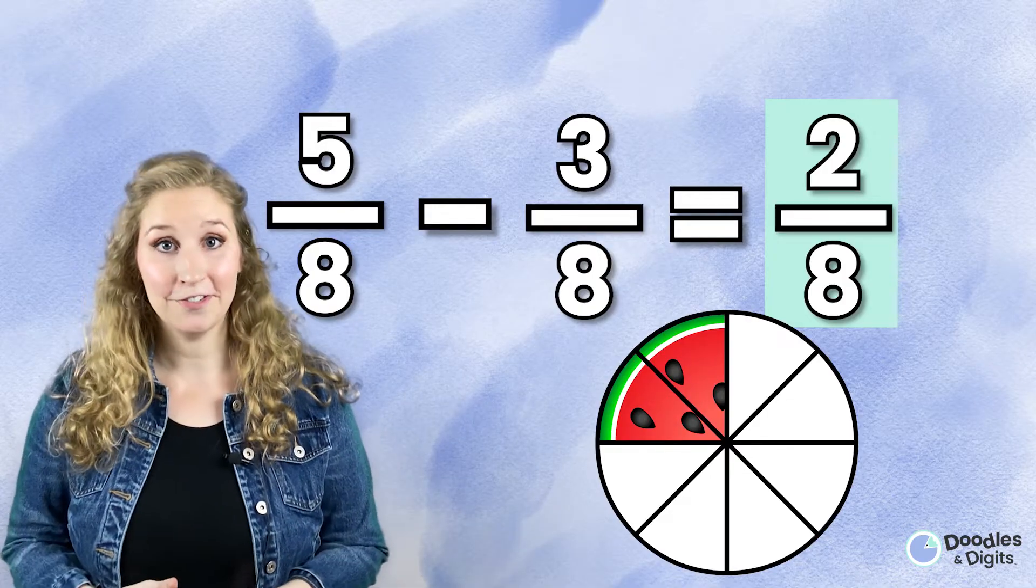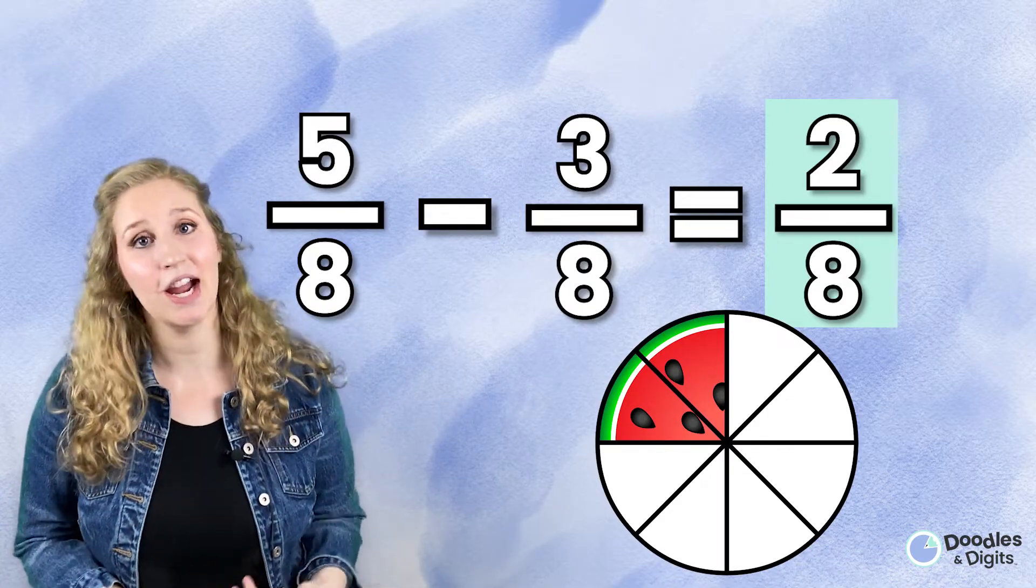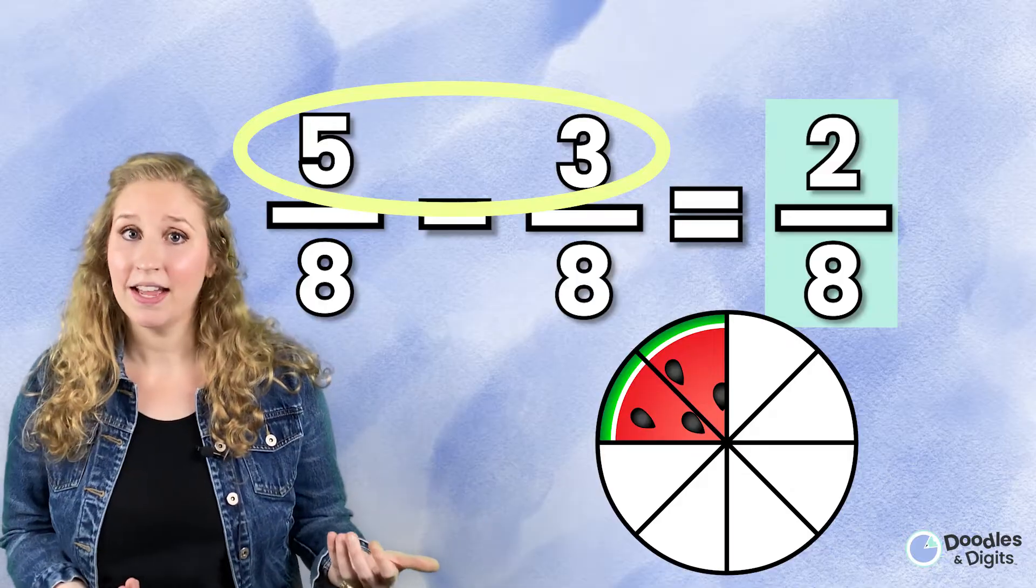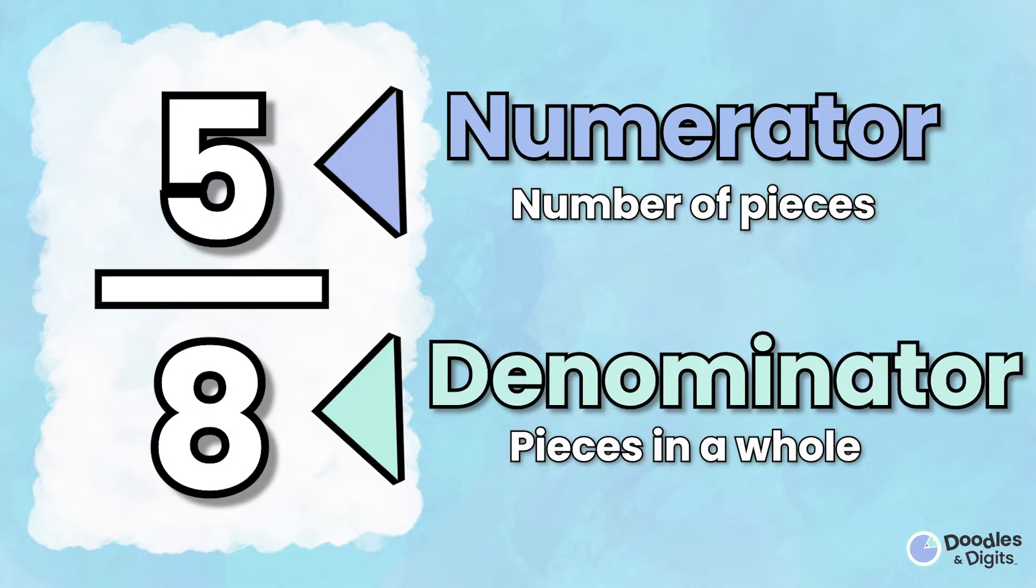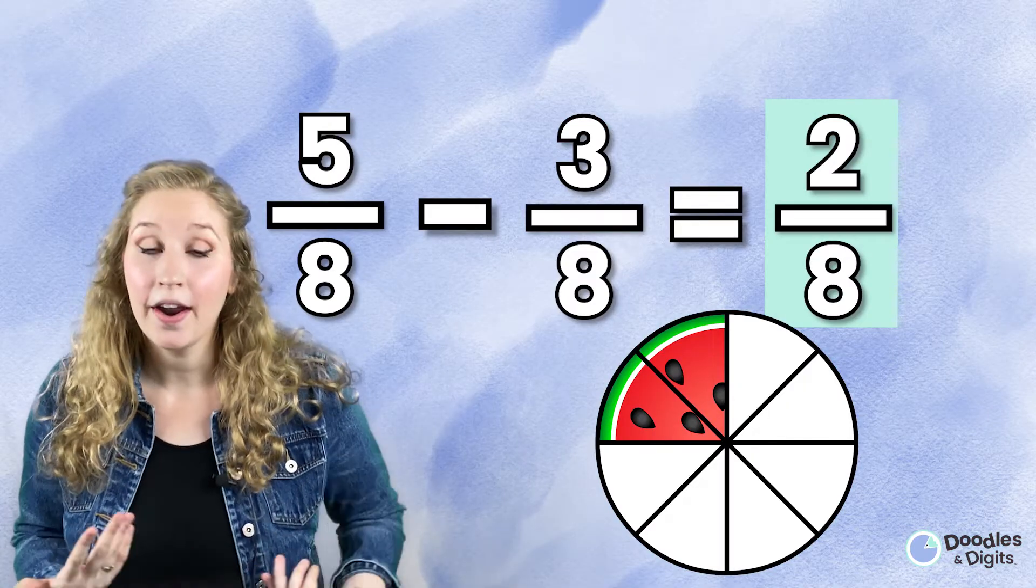Alright, so when you subtract fractions, you're gonna actually only subtract the numerator. That's because when you look at a fraction, the numerator tells you how many pieces you have and the denominator tells you how big the piece is. So this problem right here, we're subtracting the number of pieces.